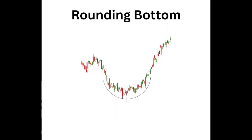The rounding bottom is a reversal chart pattern that gives traders an indication of a market reversal where sentiment is moving from bearish to bullish. The chart pattern has a U shape. On the left hand, you can see the rounding bottom. In a rounding bottom scenario, there is an initial decline in price as the number of sellers outstrips buyers. But once a bottom price is attained from the selling, buyers start to outstrip the sellers, and the price then starts to increase.